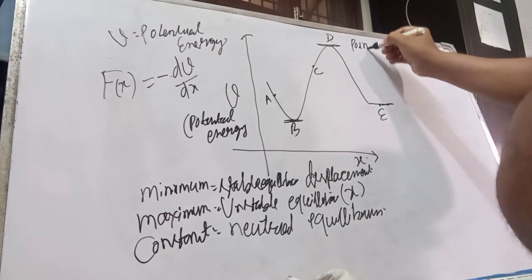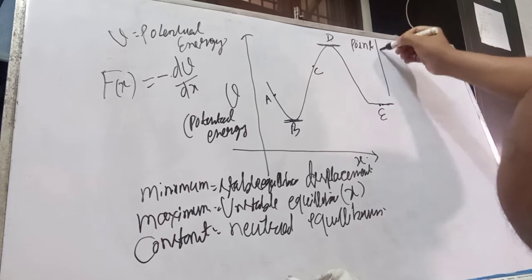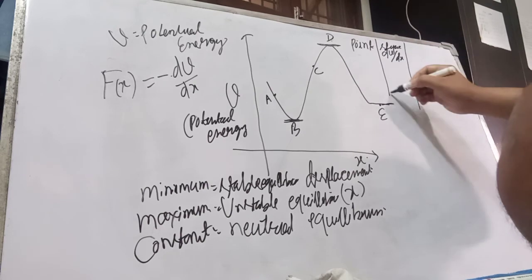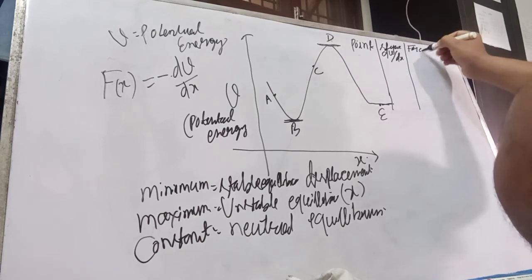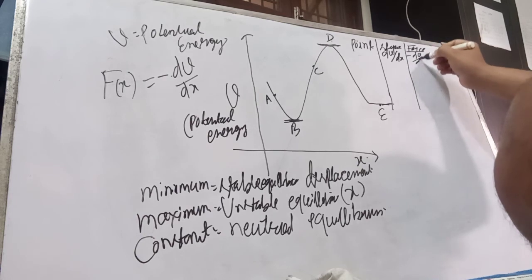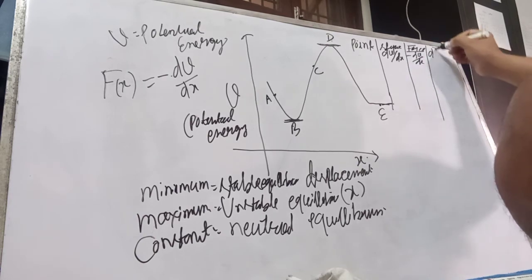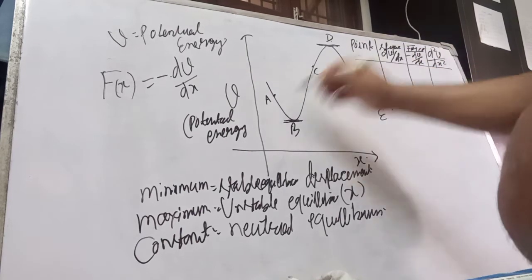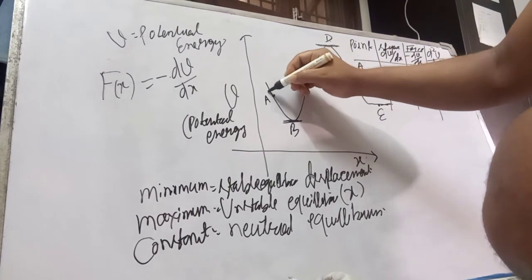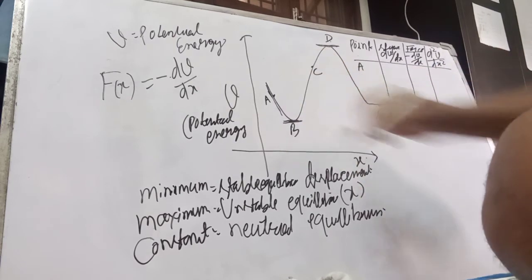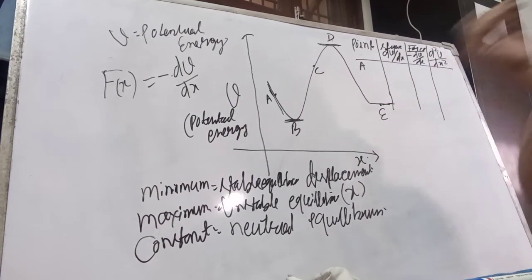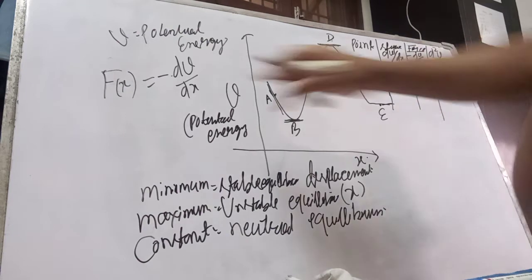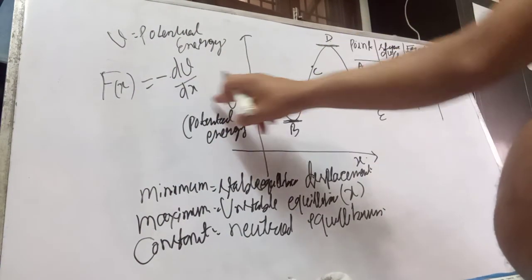We will make a table of points and their slopes. The slope value will be negative, so force — F(x) equals minus dV upon dx — slope negative means dV upon dx is negative, and force will be positive.